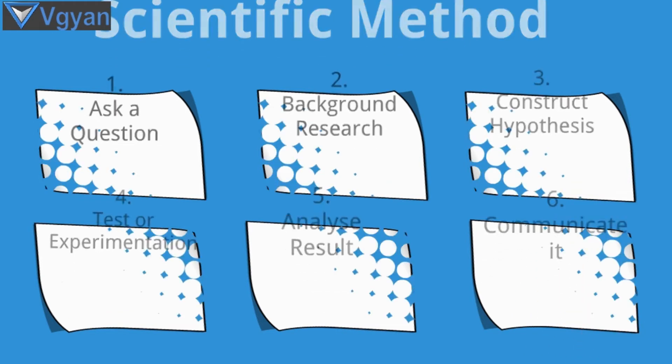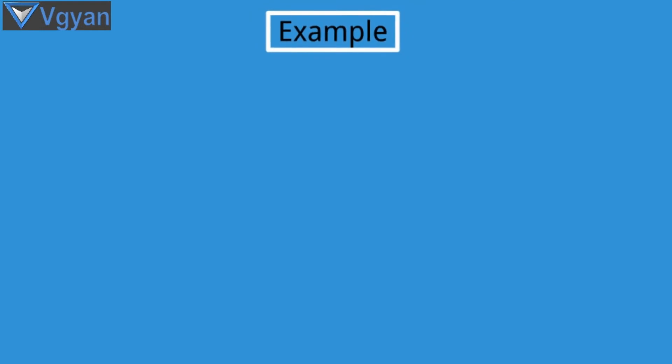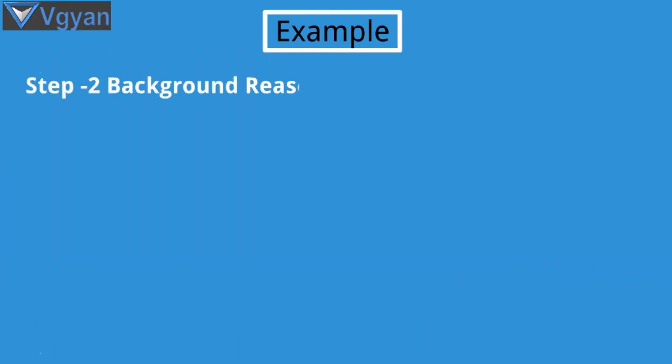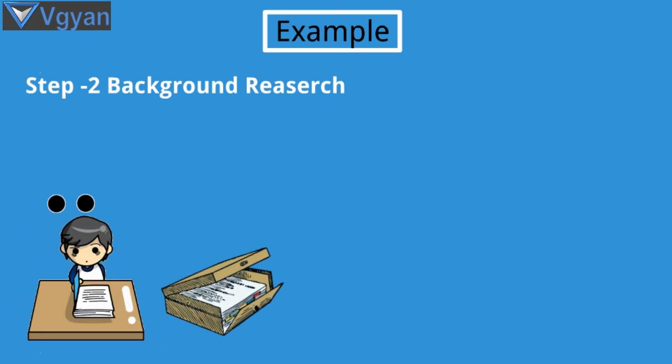Let's understand it with an example. First, we will ask a question like 'Is earth round or flat?' Then after asking a question, we will start a background research. We will start searching about earth in books, journals, or we can ask people about it or can Google it.